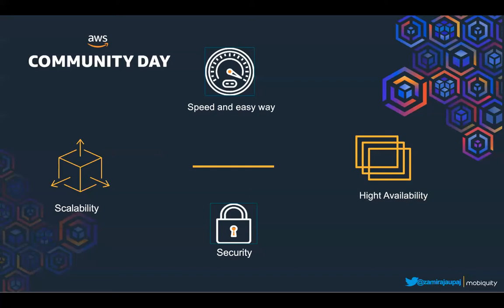High availability: the solution is a global solution composed of regions, availability zones, and local zones. Each region has a separate geographic area, and each region has multiple isolated nodes as availability zones. Control Tower is hosted in multiple locations worldwide. Right now, in the USA there are three regions supporting Control Tower: North Virginia, Ohio, and Oregon. In EMEA, Ireland; and in Asia, Sydney. You can set up in the region that you are closest to.